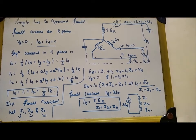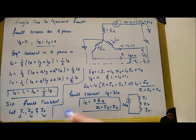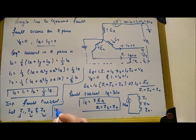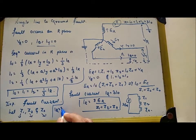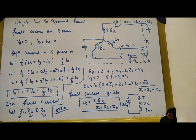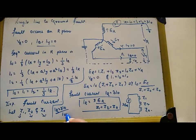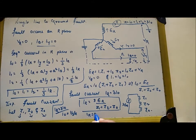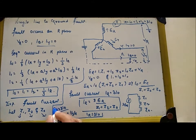One question arises: how do we get IR equal to 3·I0? This is obtained from the fact that I0 is equal to (1/3)·IR, so IR equals 3·I0. This is the concept behind IR equal to 3·I0.